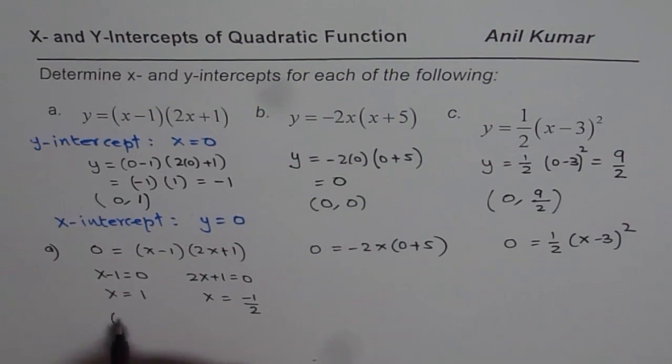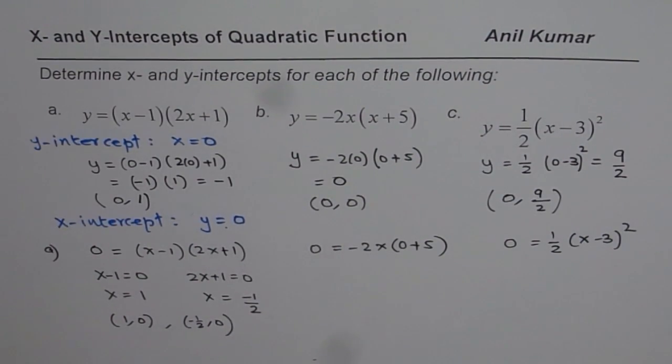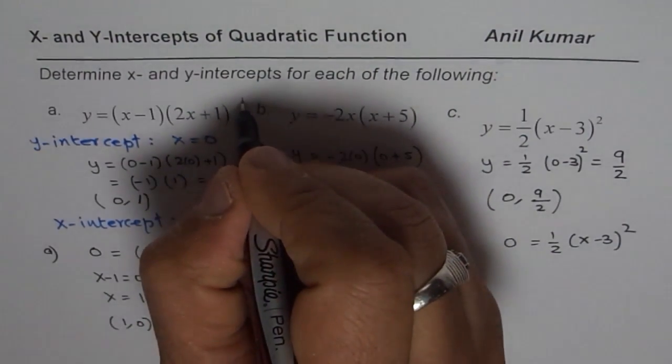So I can write my x-intercepts at 1 and 0, that is a y-value, and at minus half and 0. So that is how we can do it for part A. Now let's do the second one.